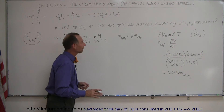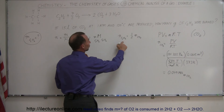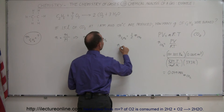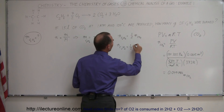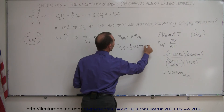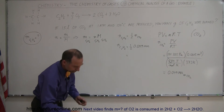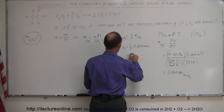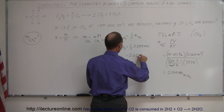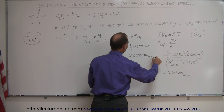From that, we should be able to figure out how many moles of ethane were consumed. The number of moles of ethane, C2H6, is equal to one half the number of moles of carbon dioxide, which is 0.049 moles. So take that, divide by 2, and we get 0.0245 moles of ethane, C2H6.